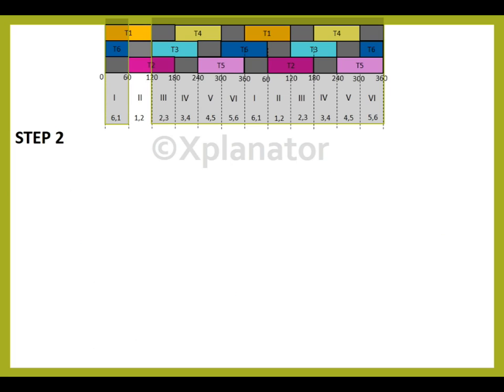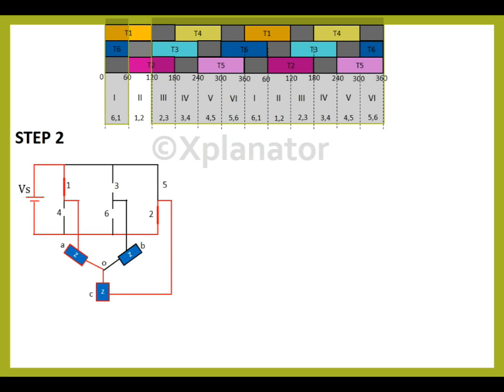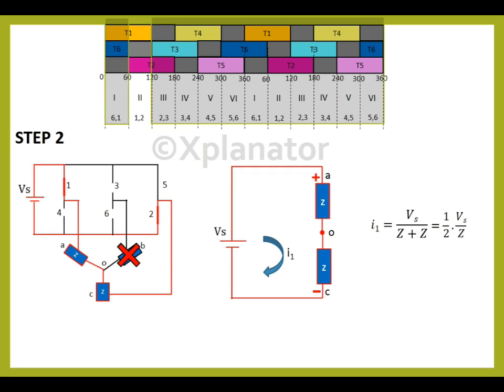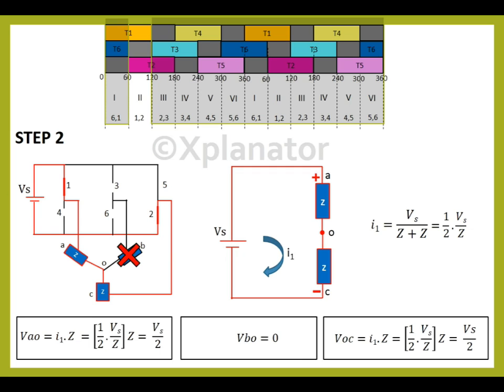Consider step 2 with thyristors 1 and 2 in conduction. The equivalent circuit in this case has A on the positive bus, C on the negative bus. The current will have same magnitude. However, the drop across the loads will vary as terminal B is not connected to the supply.